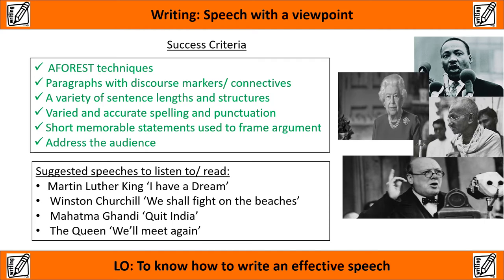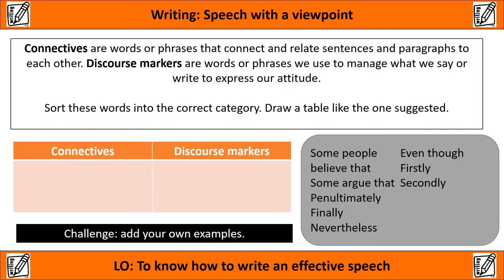Let's look at the difference between connectives and discourse markers. A connective is a word or phrase that connects and relates sentences and paragraphs to each other. A discourse marker is a word or phrase used to manage what we say or write and to express our attitude. The main difference is that a discourse marker helps express your point of view, which is really important for this task. Draw a table on your paper — two columns headed 'Connectives' and 'Discourse Markers' — and sort the words and phrases in the grey box into the table. As a challenge, think of your own examples too.